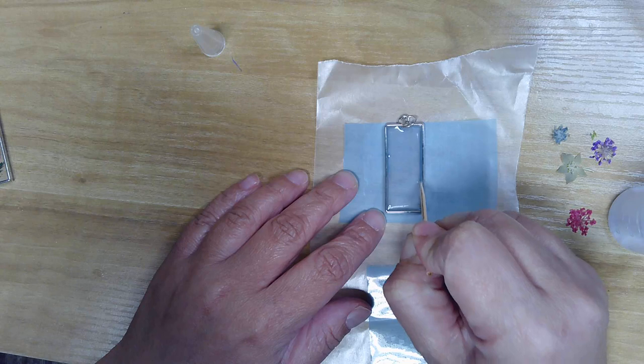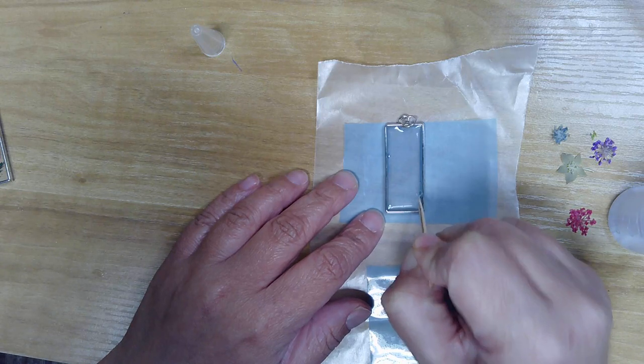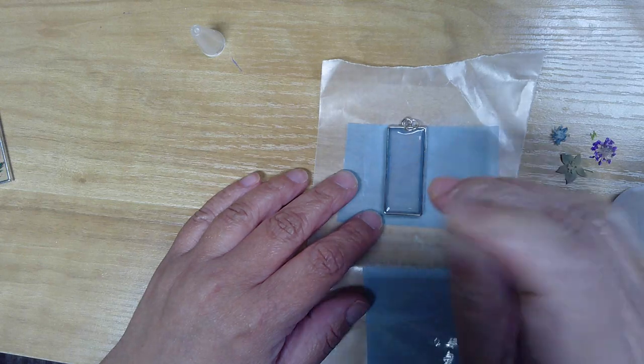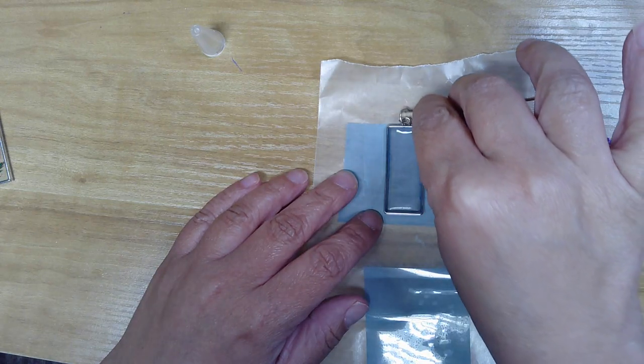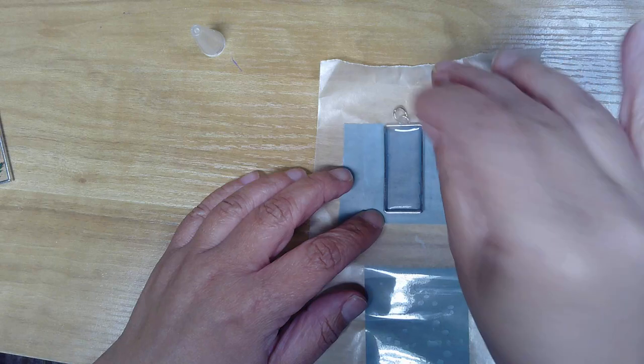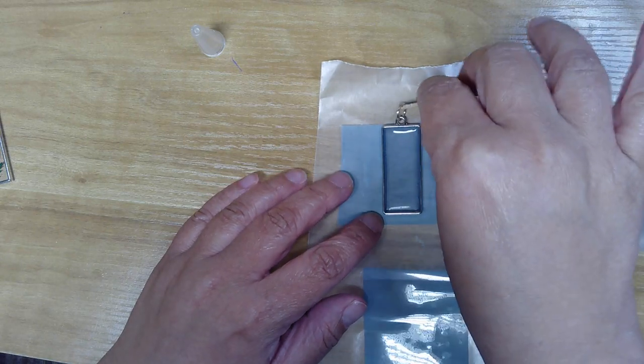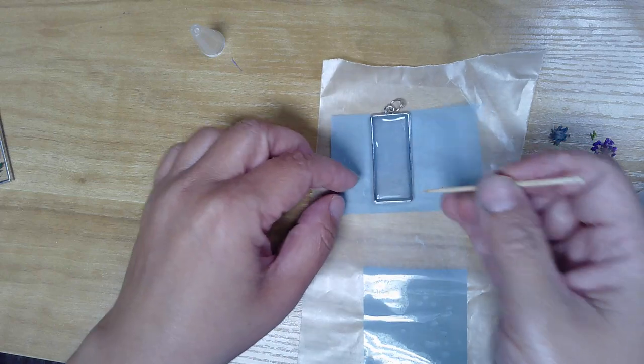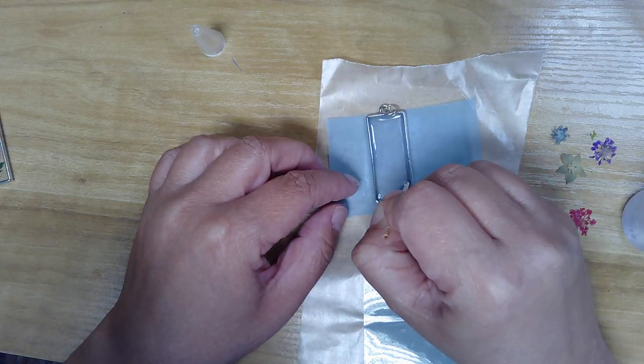You can poke those out. Get this out of the way because you don't want that to get stuck in the resin. Now I still have a couple bubbles down there.